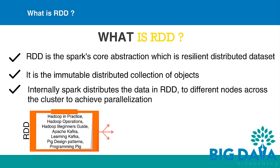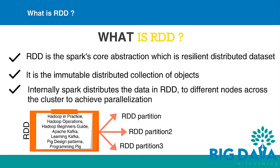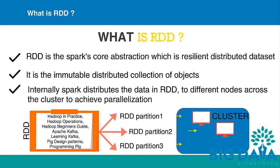Internally, Spark distributes the data in RDD to different nodes across the cluster to achieve parallelization. The data in the RDD is partitioned, and each partition is fed to different nodes across the cluster. By doing so, the operations you perform on the RDD are parallelly done.